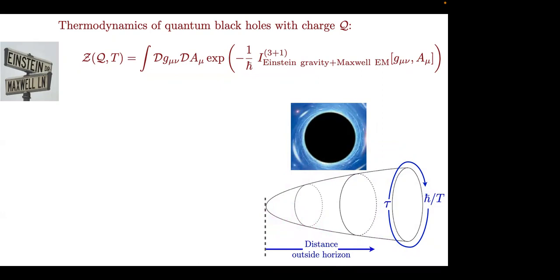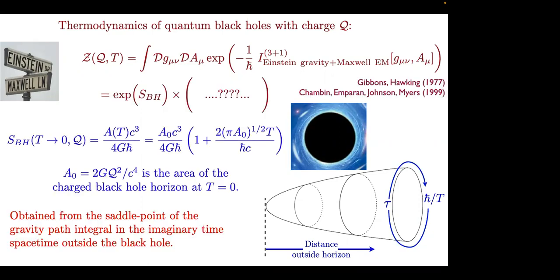The metric terminates at the horizon — you never go inside. Life becomes simple: you just compute the path integral outside the black hole. That's the pedestrian summary of Hawking's brilliant calculation. When you do that calculation carefully, you find the entropy at the saddle point is the area divided by four in Planck units, where h-bar comes in from the definition of temperature. A is the area of the horizon.